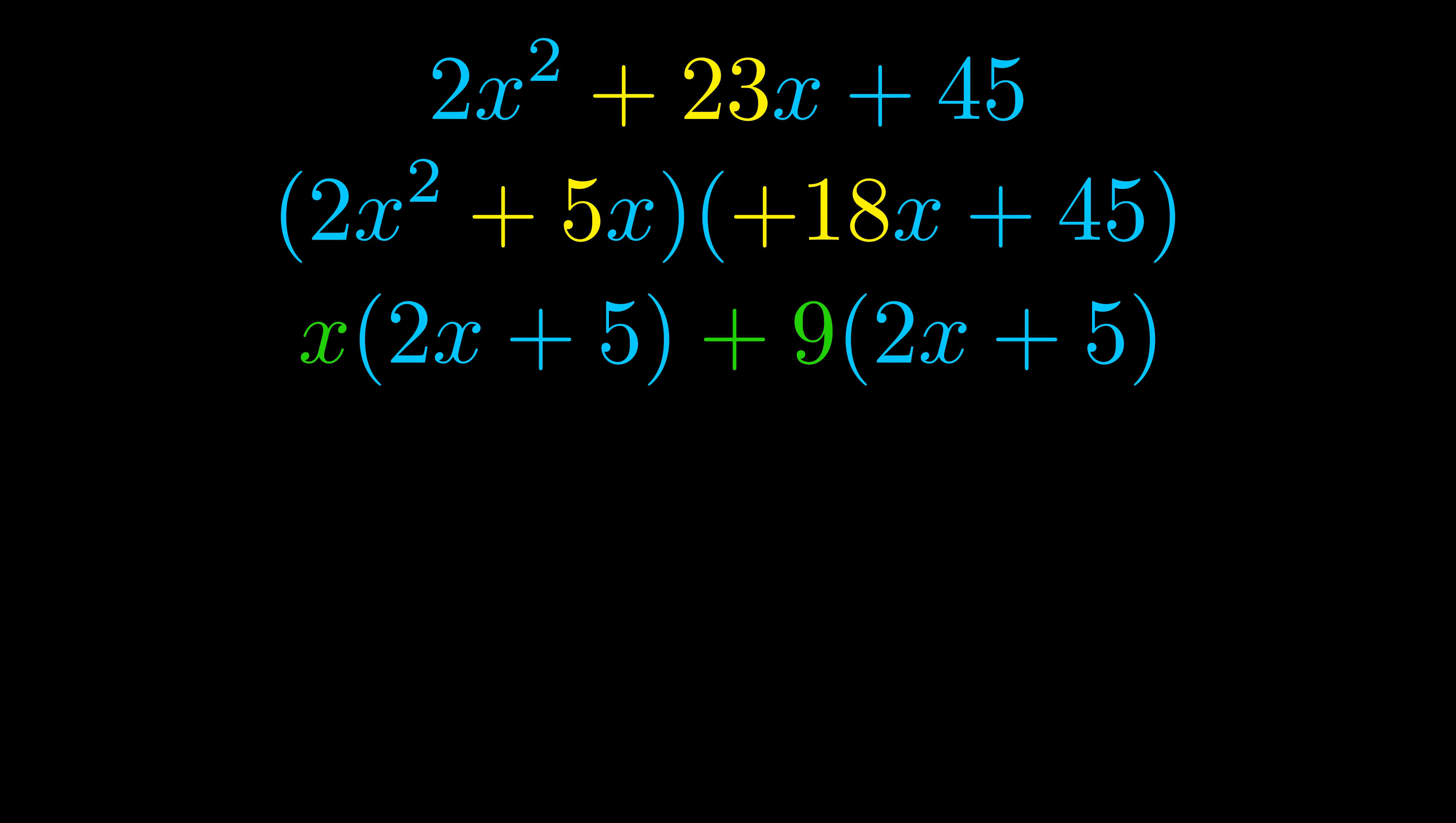Notice also how what remains inside the parentheses is the same in both cases. The blue values are the same. Those blue values will become one of our factors, and we will combine the two green values, the GCFs that we pulled out, to get the other one. And that is our fully factored equation.